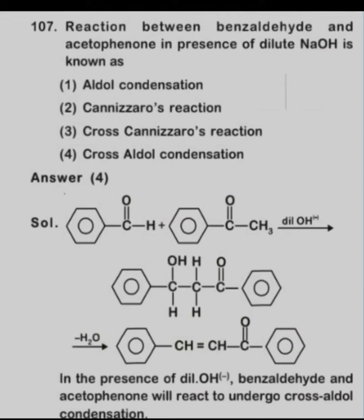Aldol condensation is found in substances which have alpha hydrogen, and both the aldehydes or ketones should be the same. The second option is the Cannizzaro reaction, in which two same types of aldehydes that do not have alpha hydrogens undergo the Cannizzaro reaction.